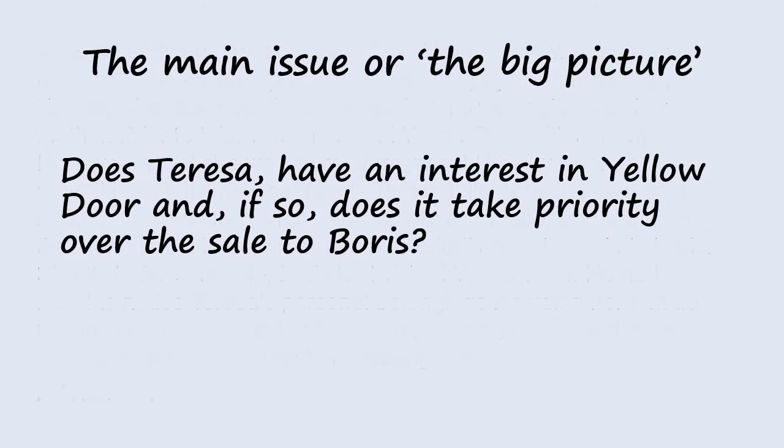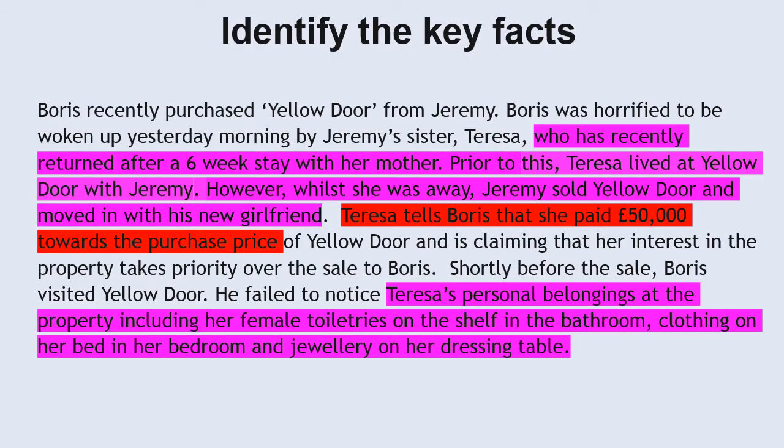So here is the main issue or the big picture which is does Teresa who's the third party have an interest in yellow door and if so does that interest take priority over the sale to Boris. On this slide I've identified the key facts for you. And the facts in red relate to whether Teresa has an interest in yellow door and the facts in pink we're going to use to decide whether Teresa was in actual occupation of yellow door at the time of the sale.